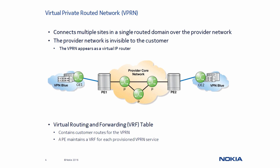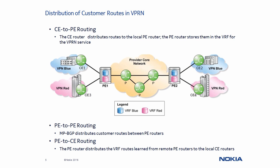VPRN is a layer 3 service that connects multiple sites in a routed domain over a provider managed network. The IP and MPLS network of the service provider is invisible to the customer, and because of this, a VPRN appears as a virtual IP router. The PE router maintains a separate virtual routing and forwarding table for each VPRN service, and this table contains the customer's routes for the VPRN.